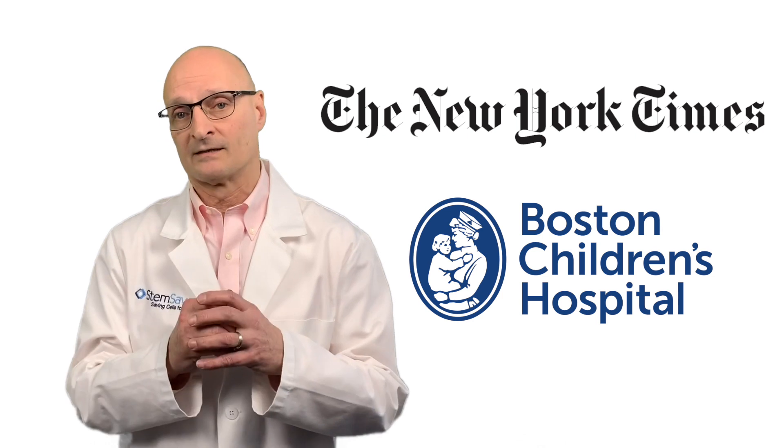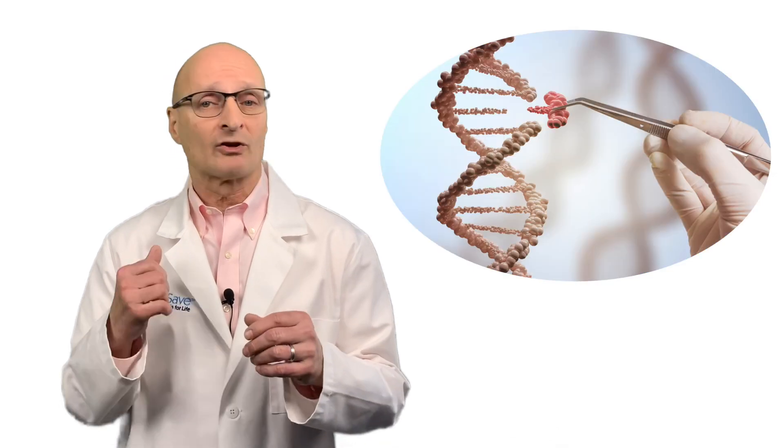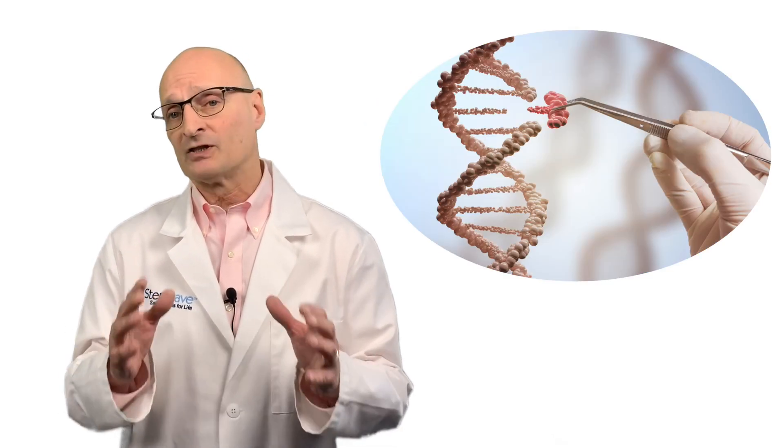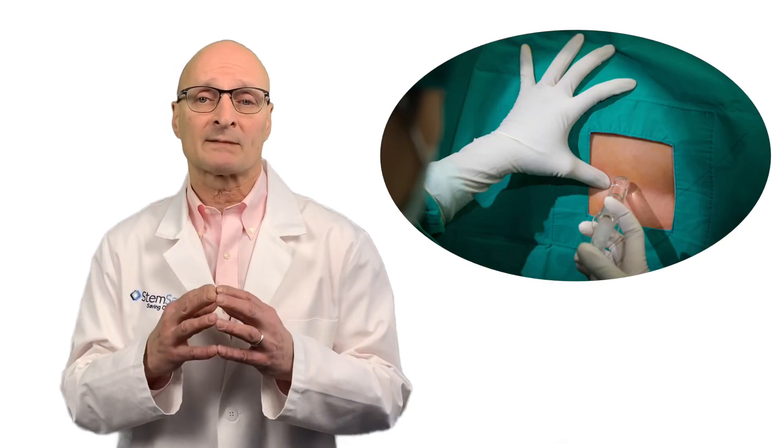The process works like this: the patient's own stem cells are recovered, and then using CRISPR, the gene editing technology, the defective gene is neutralized and replaced. The corrected stem cells are then transplanted back into the patient, where they regenerate red blood cells without the sickle cell defect.